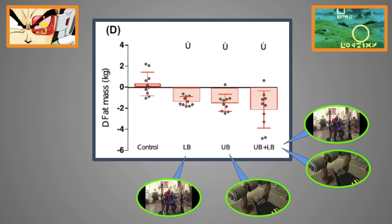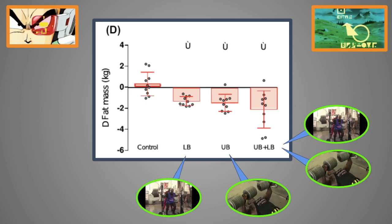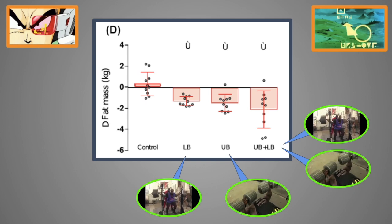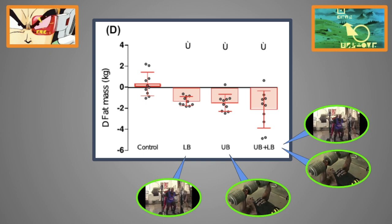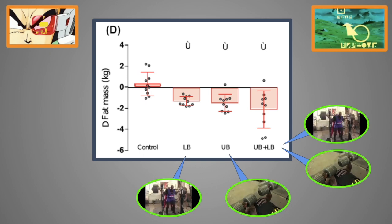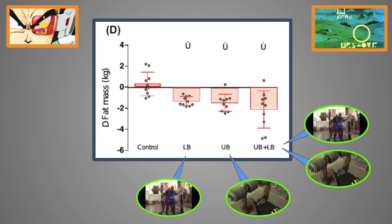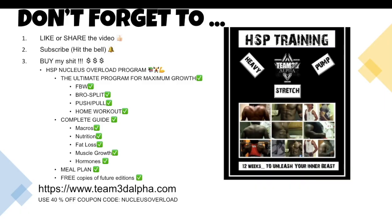Anyway, I hope this video helps. I hope that answers the question as far as how to maximize the follistatin to myostatin ratio while training. Stay tuned for more videos on the subject. If you want to see my other videos on the other ways to lower myostatin or increase follistatin, check out the playlist. Don't forget to like or share the video, subscribe and hit the bell, and buy my HSP, Nucleus Overload Training program.